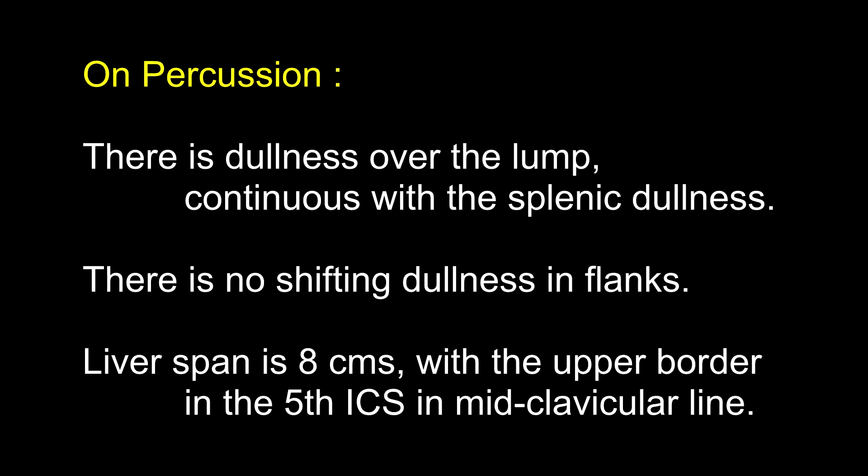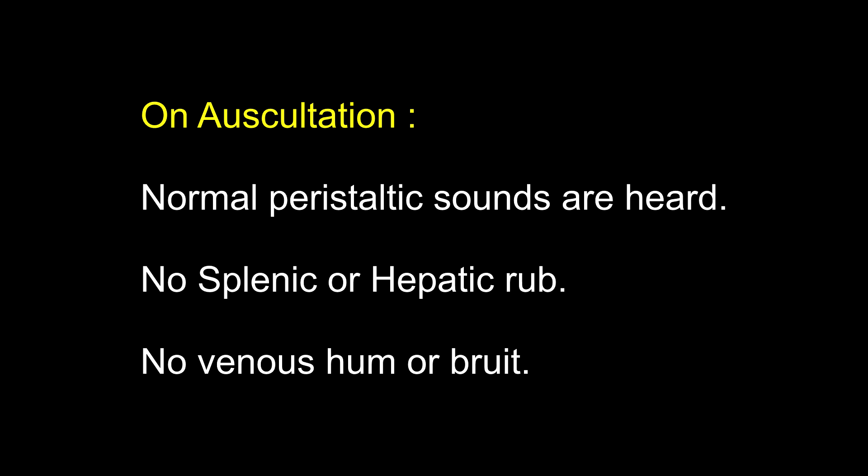On percussion, there is dullness over the lump continuous with the splenic dullness. Where is normal splenic dullness situated? Along the 9th intercostal space from the posterior axillary line. If the spleen is enlarged, there is dullness over the 8th and 9th interspace in the anterior axillary line. There is no shifting dullness in the flanks. Liver span is 8 cm with the upper border in the 6th intercostal space in the mid-clavicular line. On auscultation, normal peristaltic sounds are heard. No splenic or hepatic rub, no venous hum or bruit.